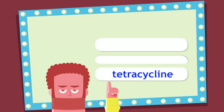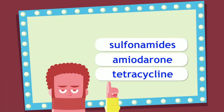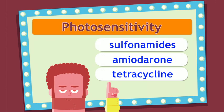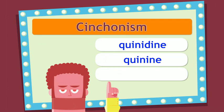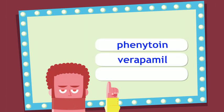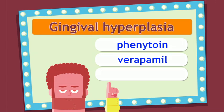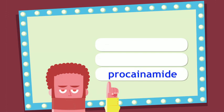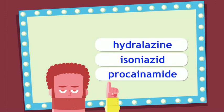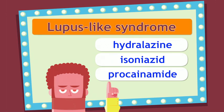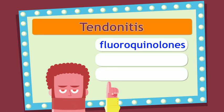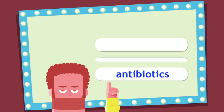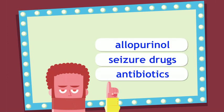Game show #3 review: Tetracycline, amiodarone, sulfonamides — SAT for photosensitivity. Quinine and quinidine (the two Q's) — cinchonism. Verapamil and phenytoin — gingival hyperplasia. Procainamide, isoniazid, hydralazine (SHIPP mnemonic) — lupus-like syndrome/drug-induced lupus. Fluoroquinolones — tendonitis. Antibiotics, seizure drugs, and allopurinol — Stevens-Johnson syndrome.